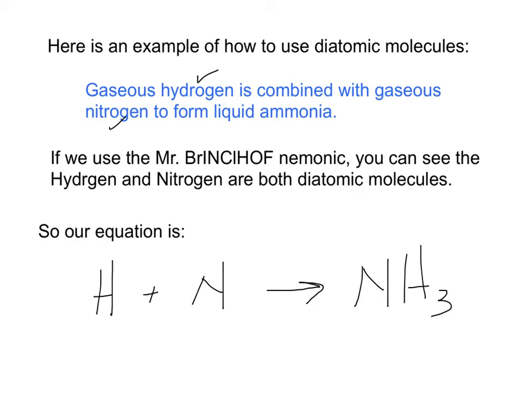Now I've got these two elements — hydrogen and nitrogen — and I want to remember Mr. Brinkelhoff. Are they part of Brinkelhoff? Yes — here's the hydrogen and here's the nitrogen, so they exist in a diatomic state. I need to put the subscript 2 on each of them. Then to balance the equation: I have 2 hydrogens on the left and 3 on the right, so I swap the coefficients — put 3 on the H₂ side and 2 on the NH₃ side. That gives 3×2 = 6 hydrogens on the left and 2×3 = 6 hydrogens on the right. I have 2 nitrogens on the left and 2 nitrogens on the right. I'm now balanced.